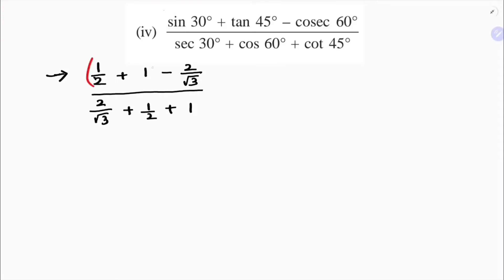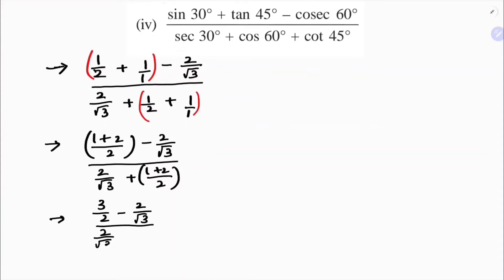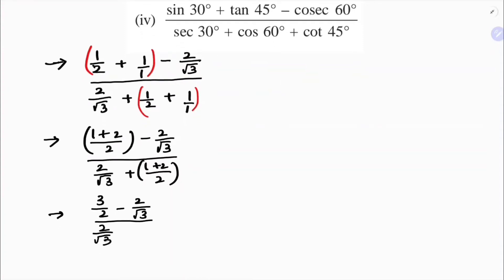Now I'll simplify this. Looking at the numerator, I'll take LCM of 2: so 1/2 + 1 = 3/2, and then minus the cos60 term. For the denominator, similarly taking LCM of 2 gives 1 + 2 = 3. So the numerator simplifies to 3/2 and the denominator involves 2/√3 plus 3/2.